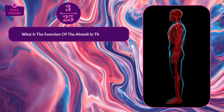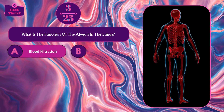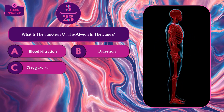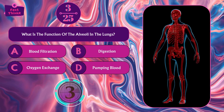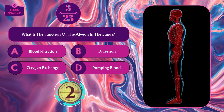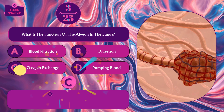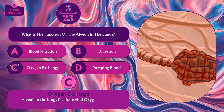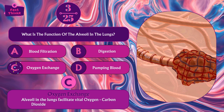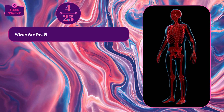What is the function of the alveoli in the lungs? Blood filtration, digestion, oxygen exchange, or pumping blood? Option C — oxygen exchange. Alveoli in the lungs facilitate vital oxygen and carbon dioxide exchange with the bloodstream.